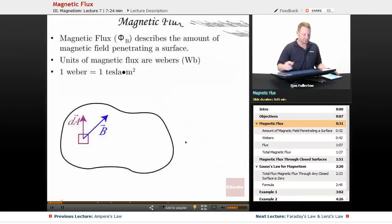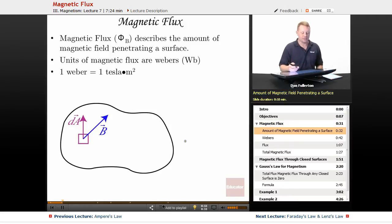Magnetic flux, φ_B (sometimes written φ_M), describes the amount of magnetic field penetrating a surface, just like it did for electric flux. The units of magnetic flux are webers, typically written Wb, where one weber equals one tesla meter squared.